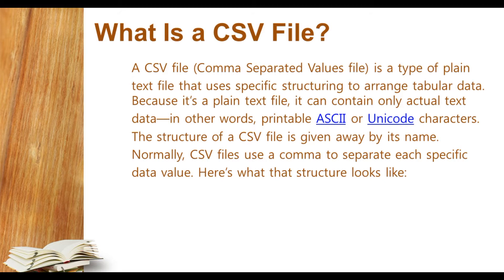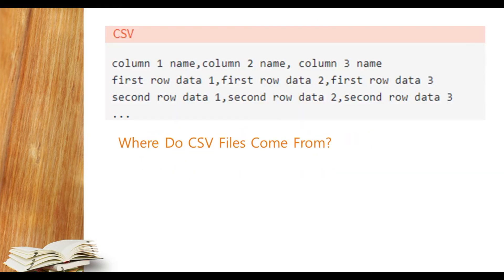The structure of a CSV file uses a comma to separate each value. The comma is known as a delimiter, which provides separation from one value to another. For example: column one name, column two name, column three name — the last one does not have a comma. Then the row data: first data one, comma, first data two, comma, first data three. This is how a CSV file stores data in a tabular format, similar to an Excel sheet, used by programs.